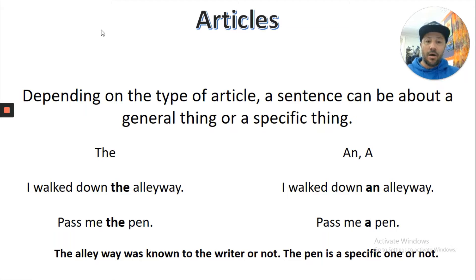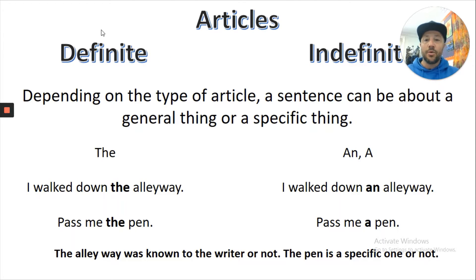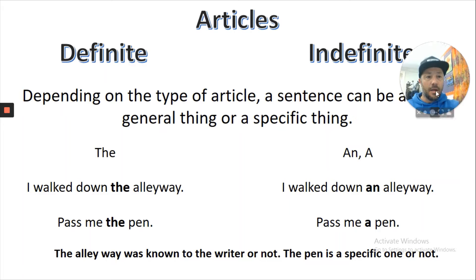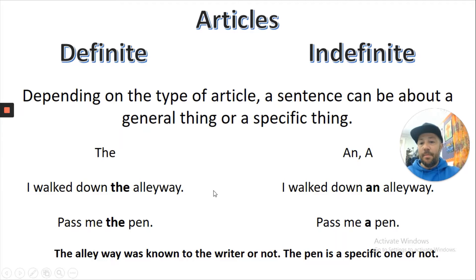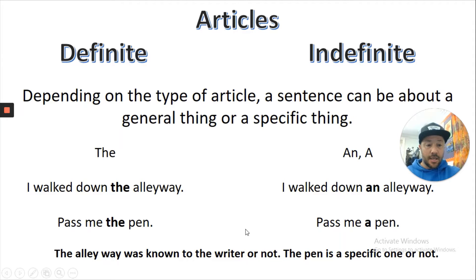Let's kick off with articles. Articles can be 'the', 'an', or 'a', but depending on what type of article it is depends on which one you use. A definite article would be 'the' — so 'pass me the pen' is a specific pen. 'Pass me a pen' could be any pen, but 'pass me the pen' is definite — definitely that pen, so that's the one I want.